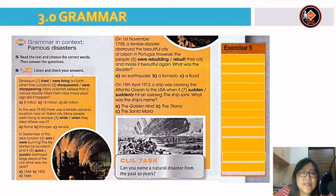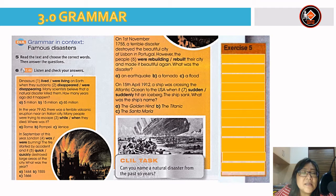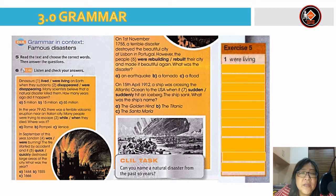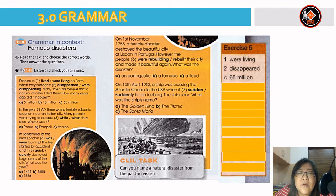Dear students, just now you read and listened to a text on famous disasters. Now let's look at the answers. Number 1 — leaving. Number 2 — disappeared. Number 3 — 65 million. Number 4 — when. Number 5 — Pompeii.